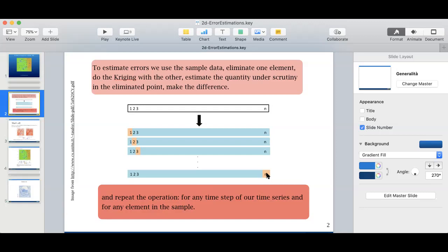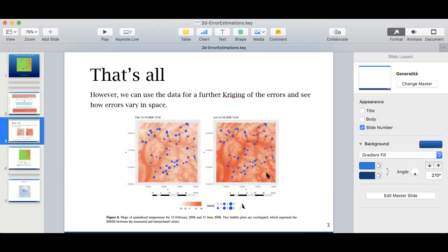Actually, we can apply this method for any type of interpolation. And what is the result? We have an error point, error for distance, in this case in temperature, in different points at the stations, and we see how this error varies in space.